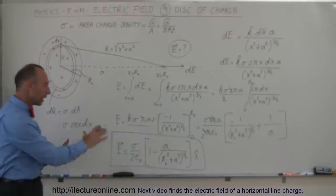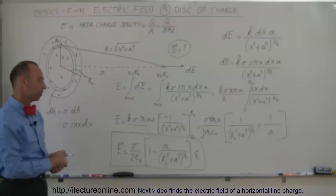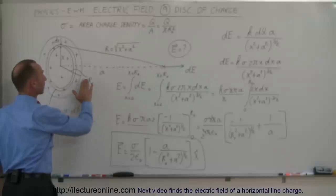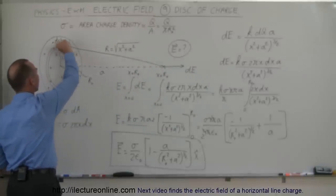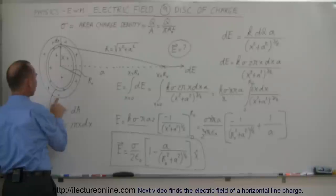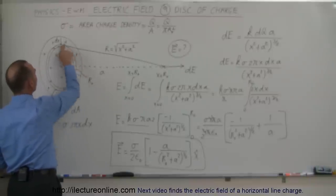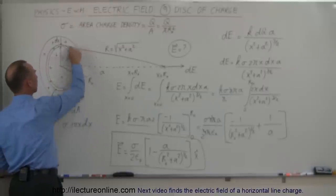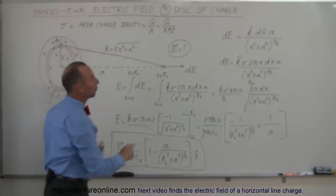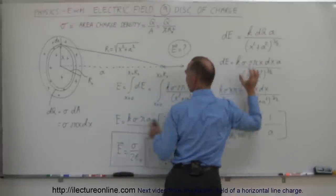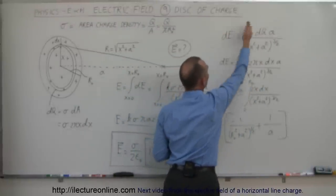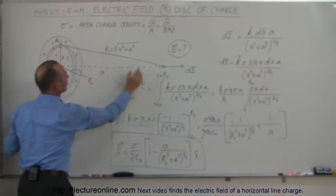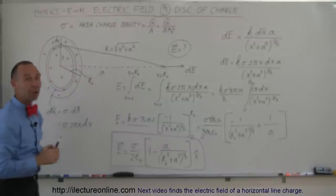That is one of the simpler forms to leave the result in. To recap: the goal was to find the electric field due to a charged disk. We started with a small ringlet of charge; dQ equals the area charge density times the area of the ringlet, which is the circumference 2πx times the thickness dx. That goes into the result from the previous video, and then we integrate — summing up all the little ringlets — to get the full electric field due to the entire disk.